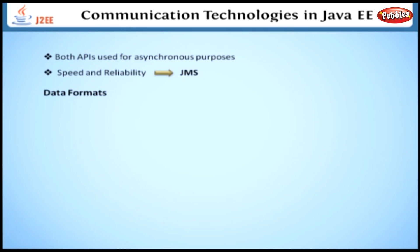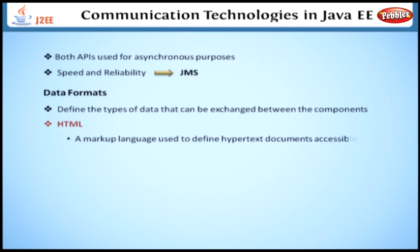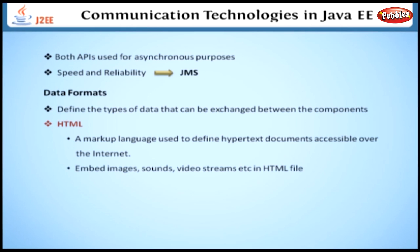Data formats define the types of data that can be exchanged between components. The Java EE platform requires support for these data formats. HTML is a markup language used to define hypertext documents accessible over the internet. You can embed images, sounds, video streams, etc. in an HTML file. HTML documents have a globally unique location and can link to one another.